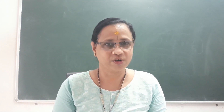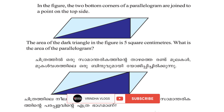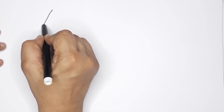The third question: In the figure, the two bottom corners of a parallelogram are joined to a point on the top side. The area of the dark triangle in the figure is 5 square centimeters. What is the area of the parallelogram? Now, we have a question here.